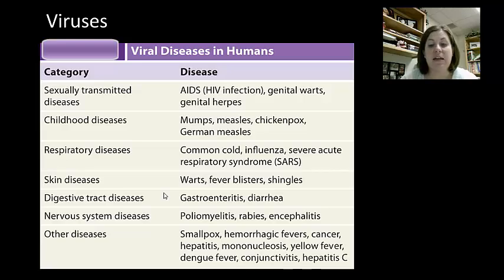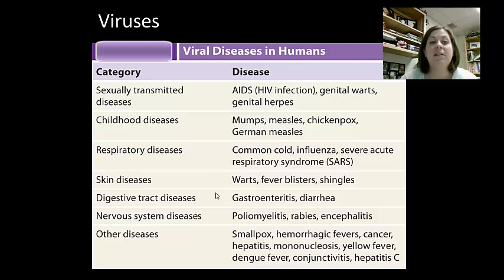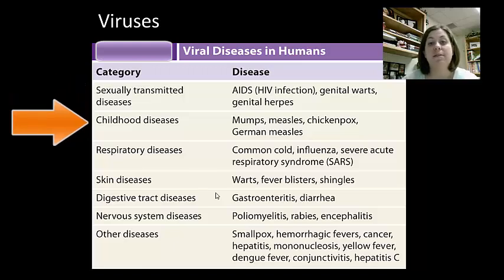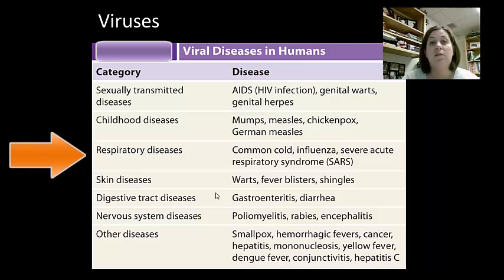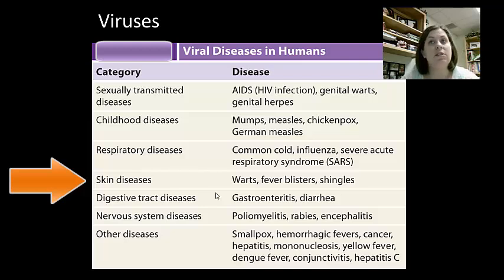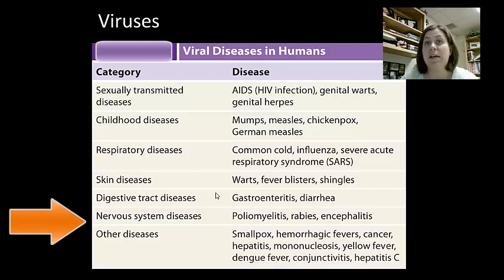Here are some of the viruses that can affect humans. Sexually transmitted ones include AIDS, genital warts, and genital herpes. Some childhood diseases, which we don't see much anymore, are mumps, measles, chickenpox, and German measles. Respiratory diseases affect your lungs and respiratory system — the common cold, influenza, and SARS, which is Severe Acute Respiratory Syndrome. Skin diseases include warts, fever blisters, and shingles — shingles is a type of chickenpox mutation, so if you've had chickenpox or the vaccine, you could get shingles. There are also digestive issues, nervous system diseases like rabies, and other diseases like smallpox, hemorrhagic fevers. Some cancers are linked to viruses, as well as yellow fever, hepatitis C, Ebola, West Nile virus, and Hantavirus. West Nile is getting closer in many parts of the United States because it's carried by mosquitoes, and Hantavirus is a problem in northern New Mexico because it's carried by deer mice.